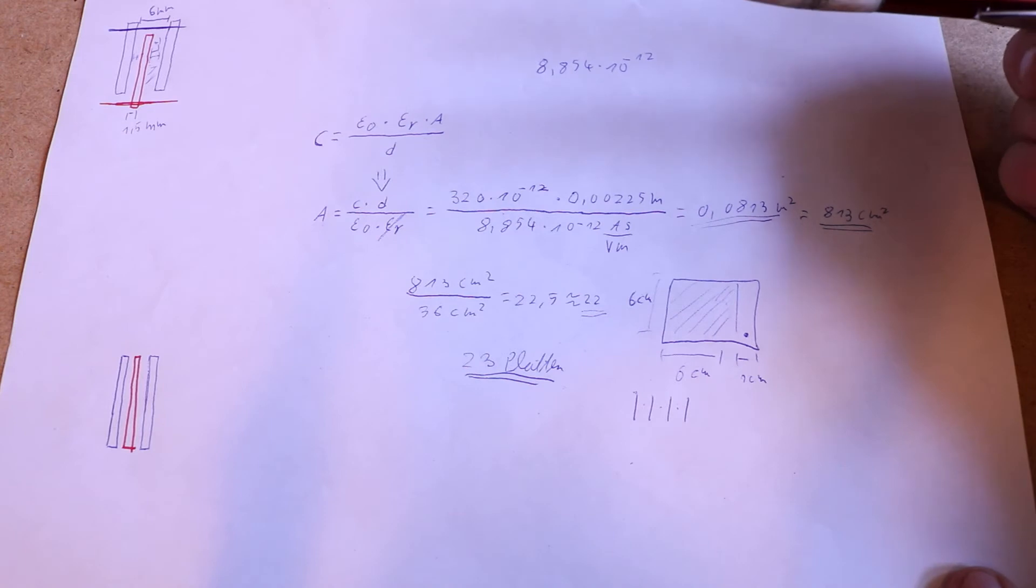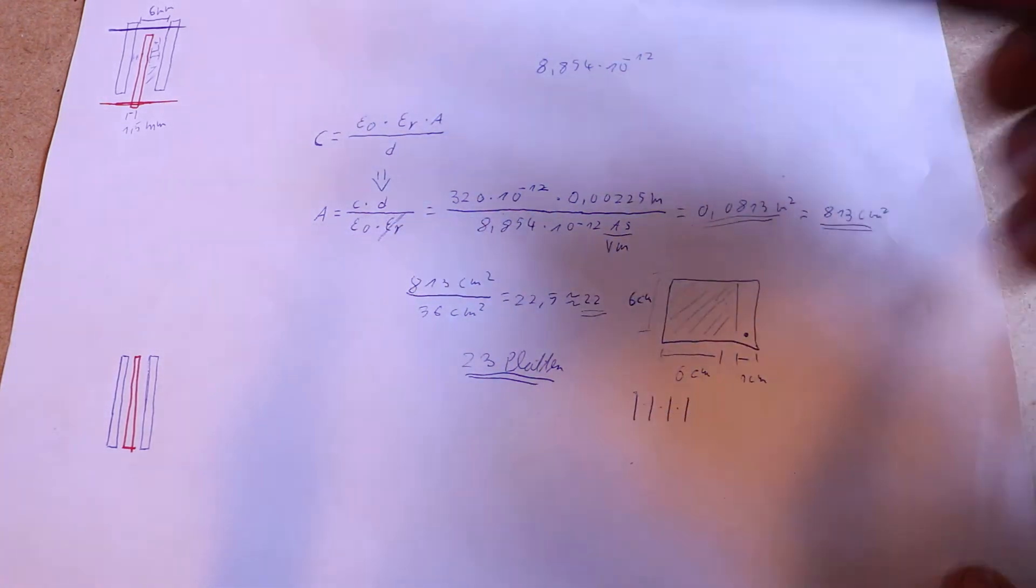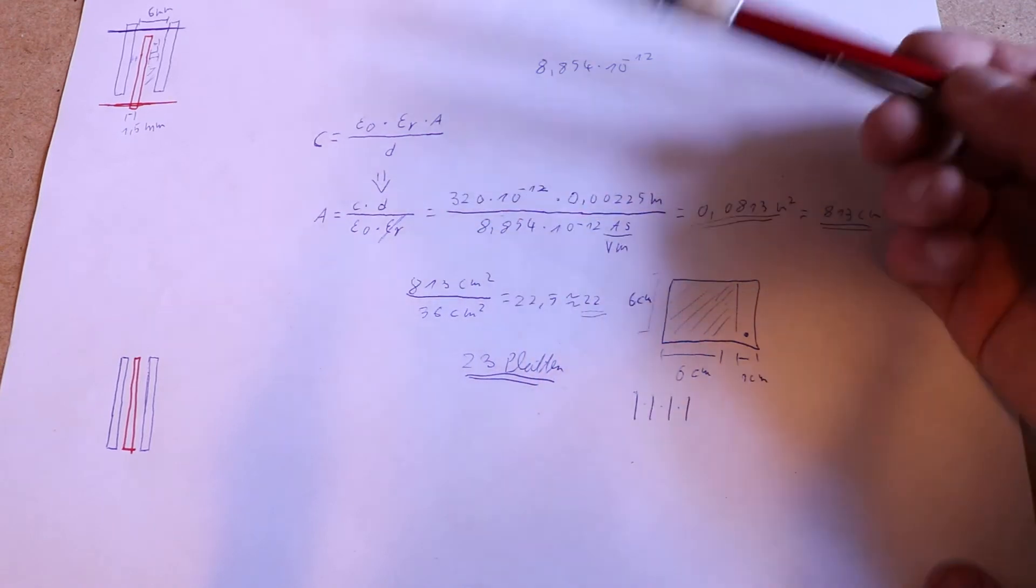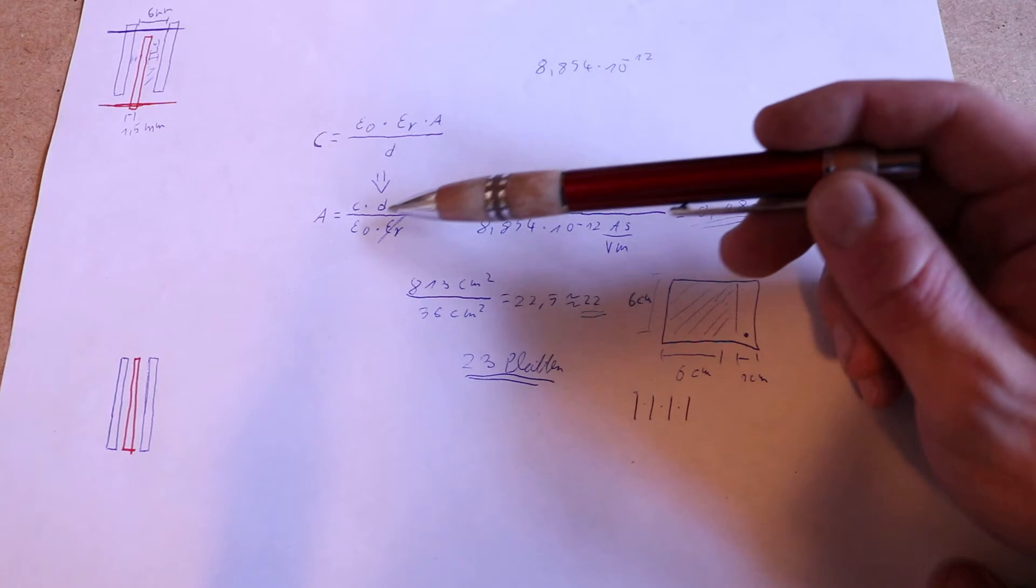But we don't want the capacitance; we want the surface area for a given capacitance to find out how many plates we have to cut. For that, I rearrange the formula.